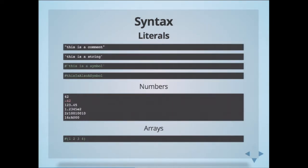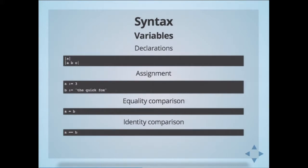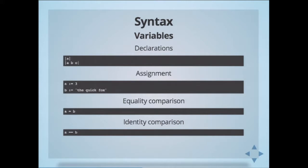Probably one of the key differences between the languages is that Smalltalk doesn't use commas to separate values. For variable declaration, the main difference is that in Ruby you can just declare things anywhere. In Smalltalk you have to actually declare usage of variables using pipes around the name of your variables — a single variable A, or multiple variables A, B, and C being declared. Ruby characters for assigning variables are equality comparisons in Smalltalk, and identity comparison is the same as in Ruby.